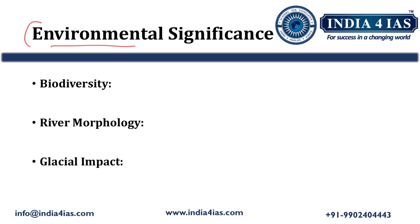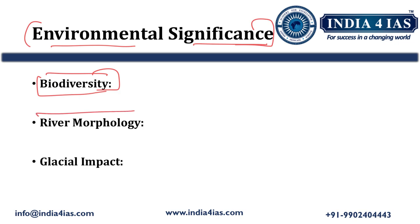Coming to the environmental significance of the Teesta River: it supports vast biodiversity and is home to rich flora and fauna. The river's upper stream areas in Sikkim are home to species like the red panda, snow leopard, and several medicinal plants. The Teesta is also known for its meandering course in the plains of North Bengal, forming large sandbars, which make it prone to flooding during the monsoon season.